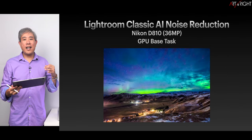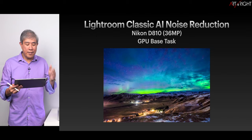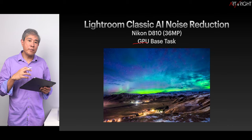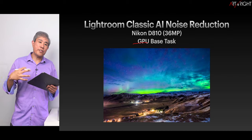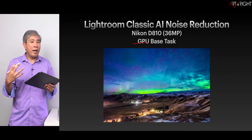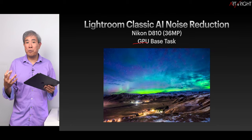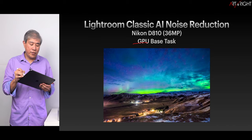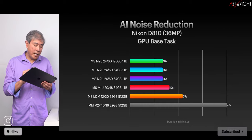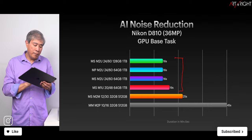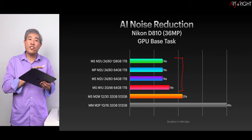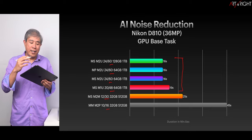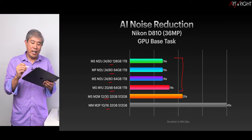Now let's take a look at Lightroom Classic AI Noise Reduction, which many of you have been asking about. This is a GPU-based task — Adobe created an AI model that runs on the GPU. I genuinely wish Adobe would code this to utilize the ML core or NPU (neural processing engine) on Apple Silicon, but that hasn't happened yet in this version. Any of the Ultra machines is performing fairly well here. Simply put, the more GPU you have, the faster it is, and the less GPU you have, the longer it takes.